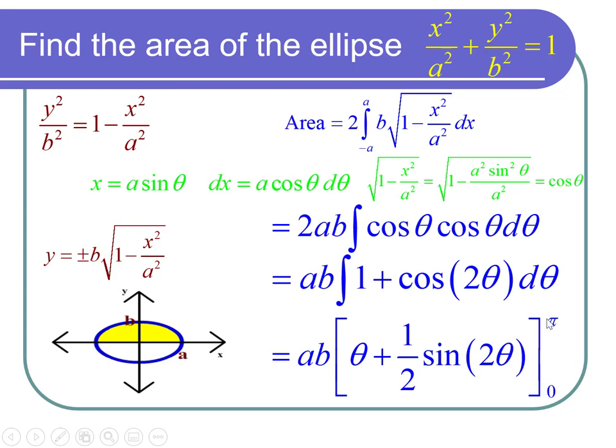We're going from zero to pi because the angle theta starts at zero on the x-axis and then goes to pi on the negative x-axis.